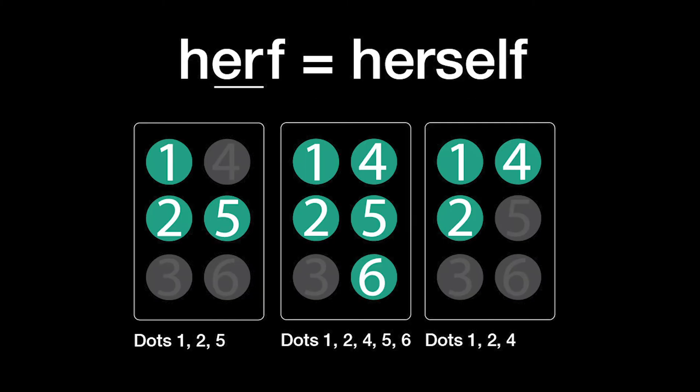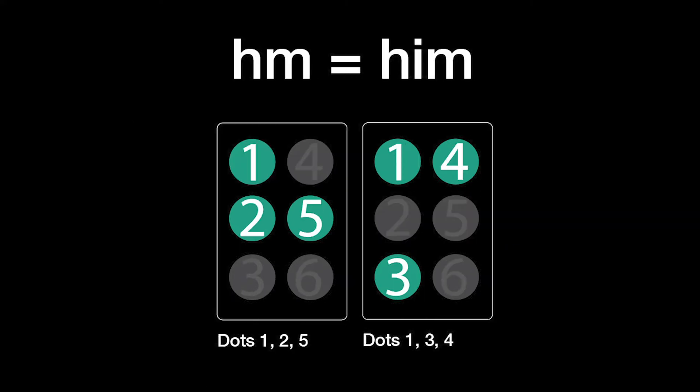Herself is H-E-R plus F: dots 1, 2, and 5, plus dots 1, 2, 4, 5, and 6, plus dots 1, 2, and 4. Him is H-M: dots 1, 2, and 5, plus dots 1, 3, and 4.